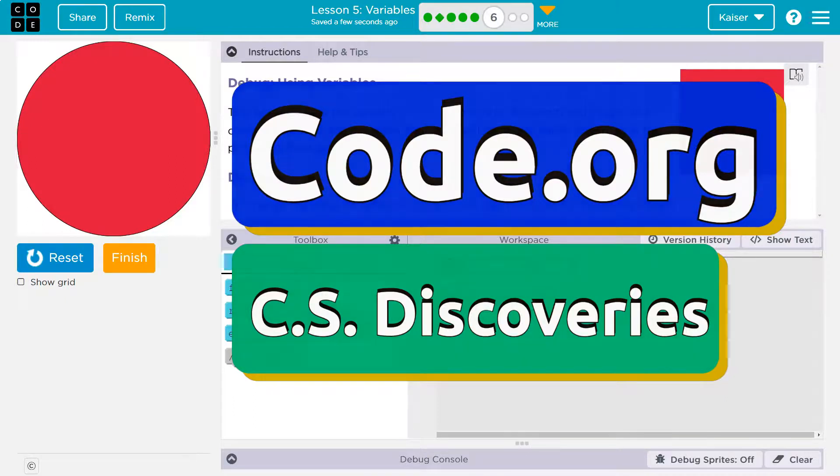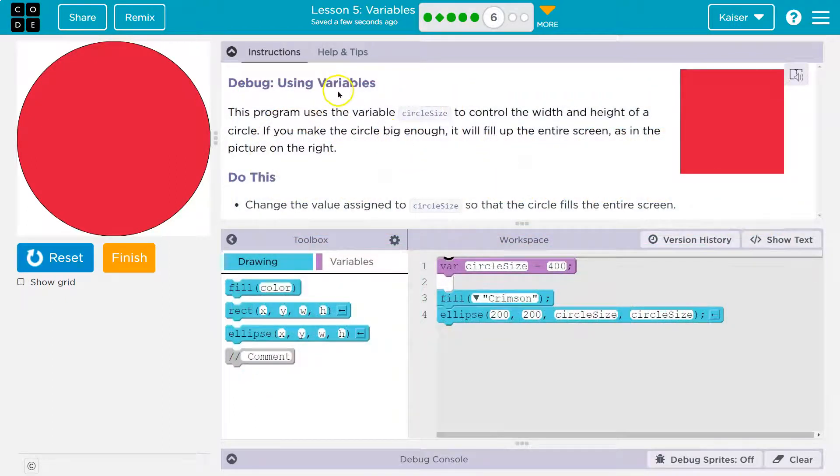This is code.org. Let's see what we have. Debug using variables. Awesome. Debugging is a super important skill. This program uses the variable circle size to control the width and height of a circle. Circle size is 400.